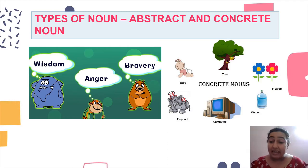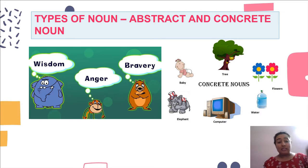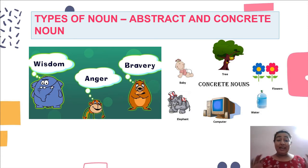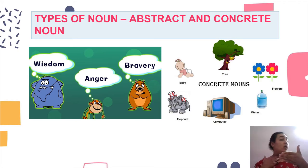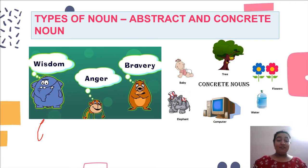Can we touch wisdom? Can we touch intelligence? Can we physically measure this person's wisdom? Can we touch anger? No — we can only feel it. We cannot see it either. The emotions that we feel are known as abstract nouns — we can only feel them, we cannot see them, we cannot touch them.